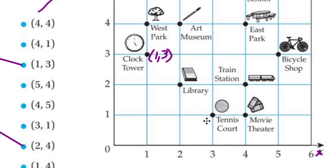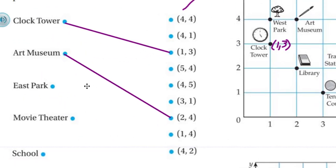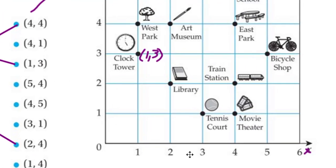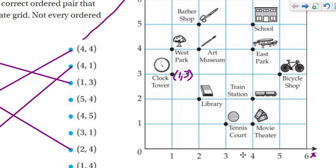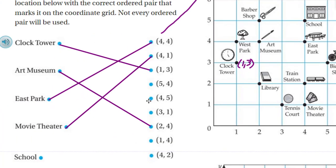Let's go to East Park. East Park: we have four, and we have one, two, three, four — so four, four. Movie theater: going across horizontally with the x value, four, four, and then one — four, one. You got to be careful; here's a one, four — we don't want that one. Finally, we have school — way up there. It's lined up with the four x value and it's all the way up at the five for school. See how those two lines meet — four, five. There's four, five. Looks pretty good.